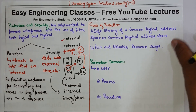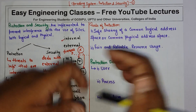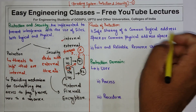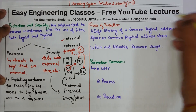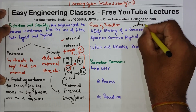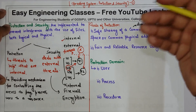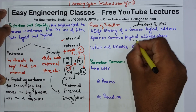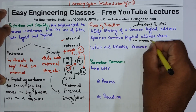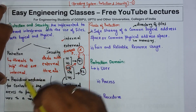This is the basic overview of protection and security. Now, what are the goals of protection? The first goal of protection is the safe sharing of a common logical address space or common physical address space. By common logical address space we mean a directory of files. So if we have to share a directory of files among users, that can be safely shared. By common physical address space we mean memory. So if a user wants to share either a directory of files or memory, that can be safely achieved with the protection mechanism.